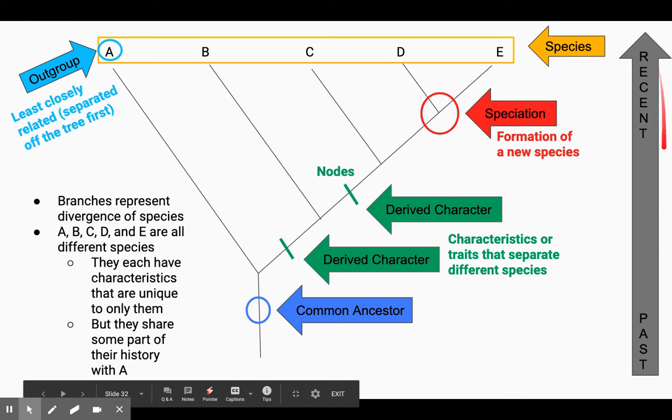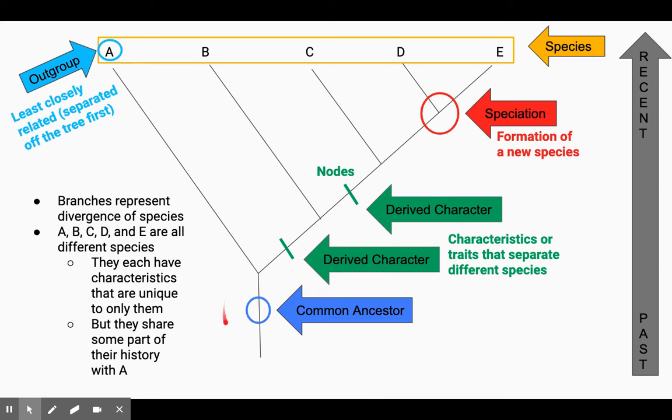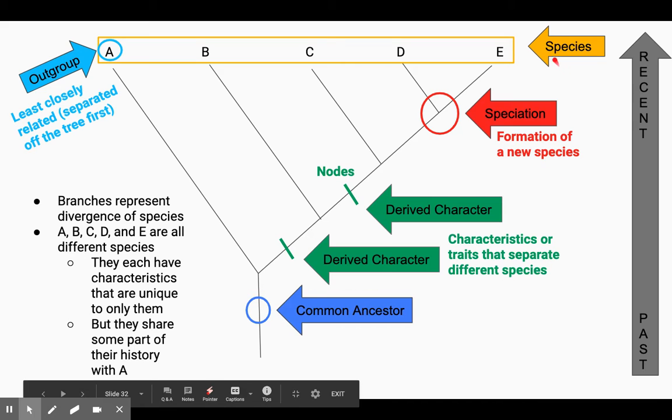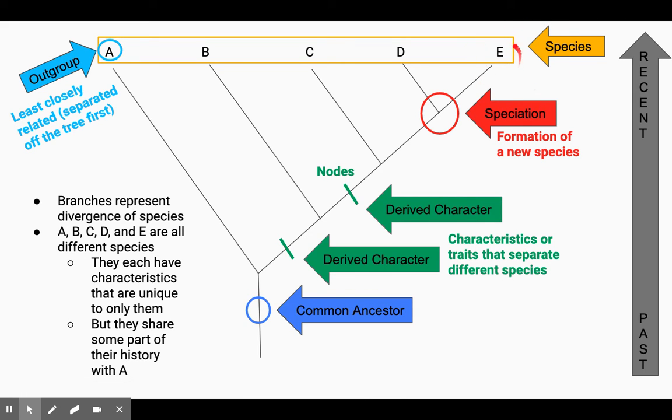Speaking of time, if you look over here, this arrow, so the lower you are on the phylogenetic tree, the more past it is. So the longer ago that this was around. And up here are the most recent species. So E would be our most recent species to develop.